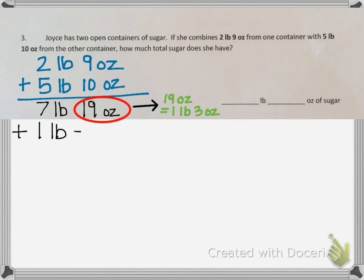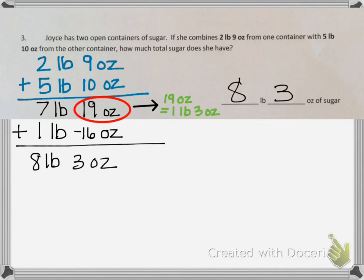Now from the 19 ounces I have to subtract 16 ounces because I converted it into 1 pound, so I only have the 3 ounces left over. For a total of 8 pounds, 3 ounces of sugar.